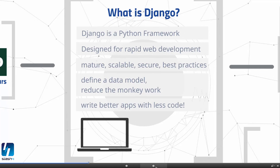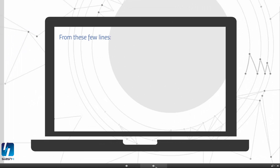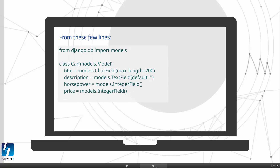Let's have a quick look at a small example. From these few lines of code, which represents a Django model, you can already build a fully functional application — in this case a car database — that lets you insert, update, delete, list and search cars in a database with a web frontend.